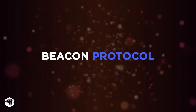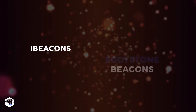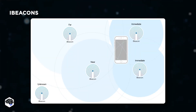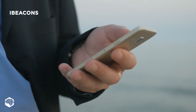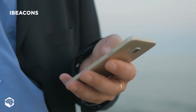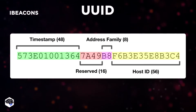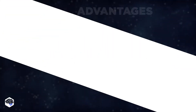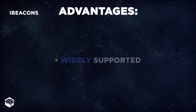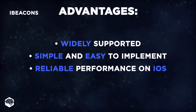We can also classify beacons by their type of beacon protocol. There are two main types: iBeacon and Eddystone beacons. iBeacon is the first beacon protocol in the market, created by Apple. iBeacon works with iOS and Android. The beacon using the iBeacon protocol transmits a so-called UUID — a string of 24 numbers which communicate with an installed mobile app. iBeacon advantages are: it's widely supported, simple and easy to implement, and shows reliable performance on iOS.